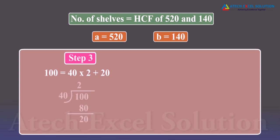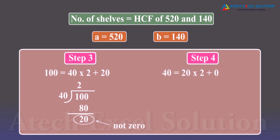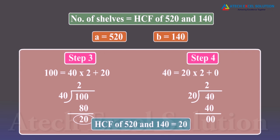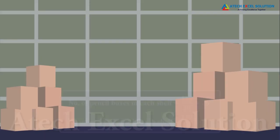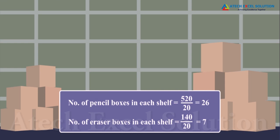Again, remainder 40 is not zero, so apply the division lemma to 100 and 40 to get 100 = 40 × 2 + 20. Remainder 20 is not zero, so apply the division lemma to 40 and 20 to get 40 = 20 × 2 + 0. The remainder has now become zero, so our procedure stops. Since the divisor at this stage is 20, the HCF of 520 and 140 is 20.